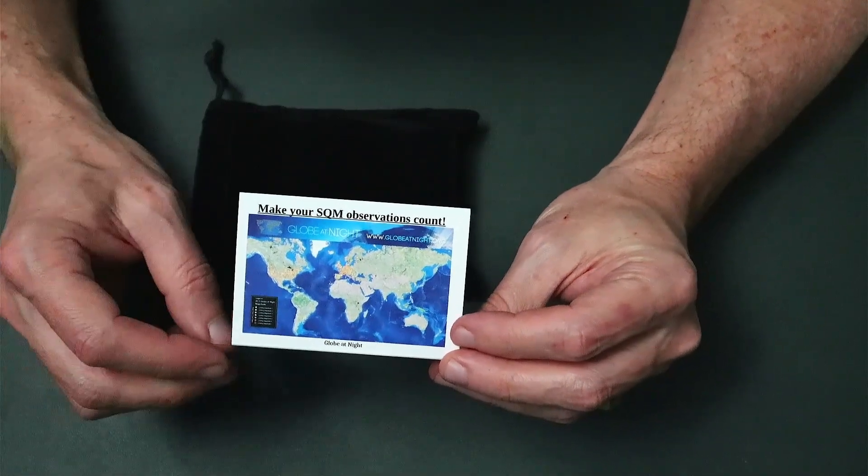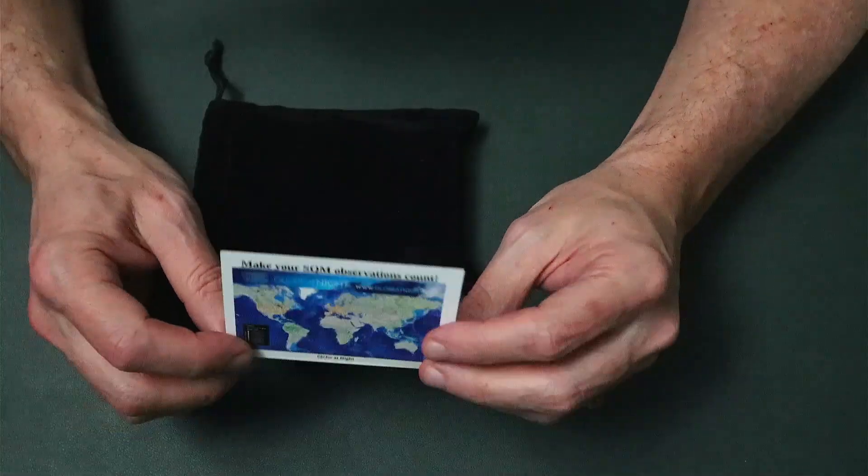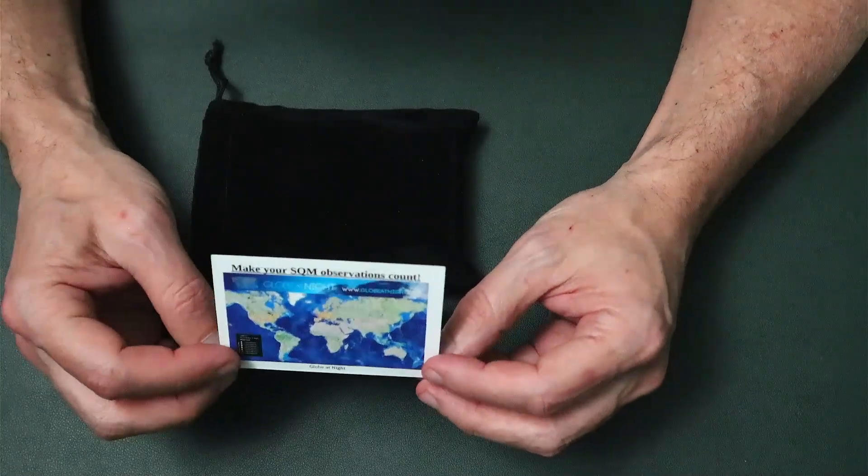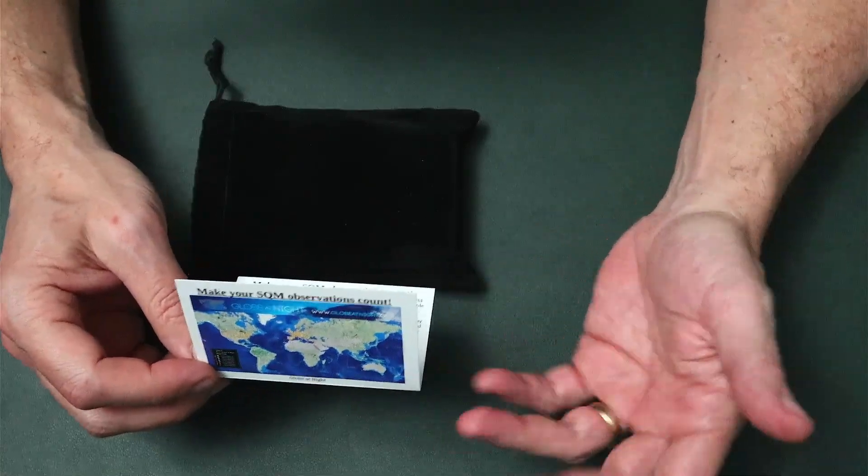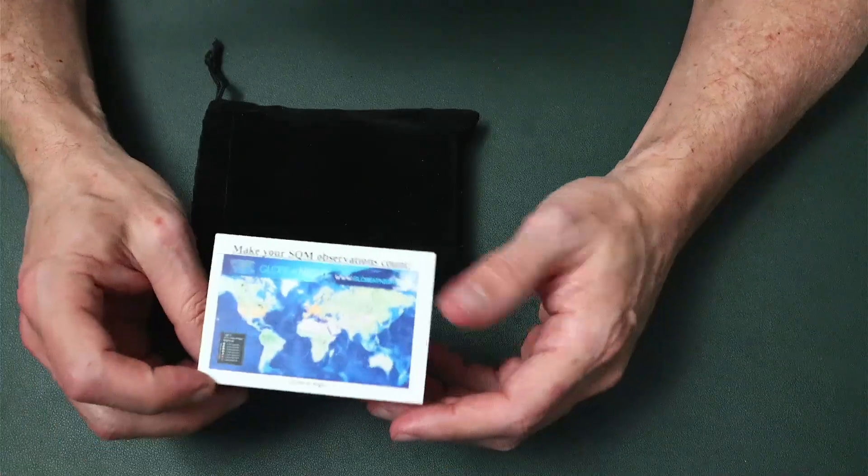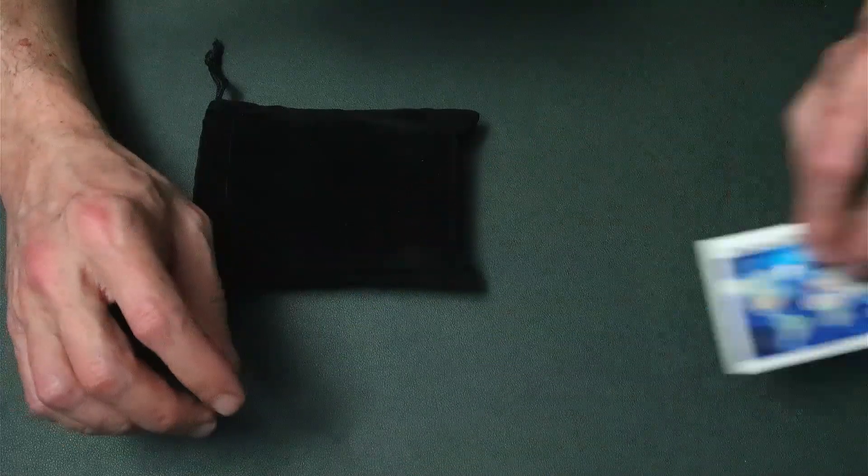I also got a card in the package and this is advertising their website and their mobile phone app, both for Android and iOS, that allows you to contribute to their initiative to track light pollution around the world. So when you take a reading with your meter, you can submit it with the app or you can go right to the website and submit it there as well. I'll show you guys that in a couple minutes.